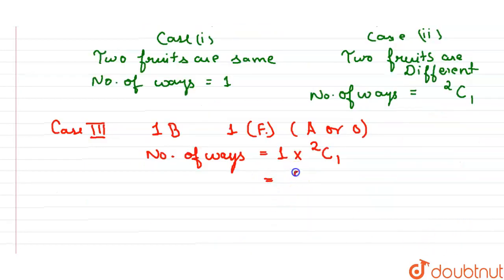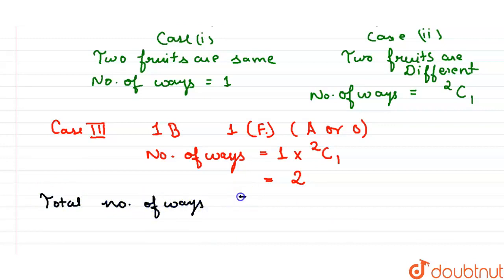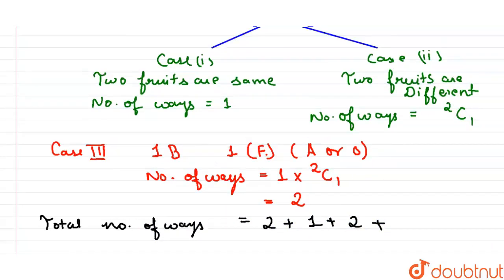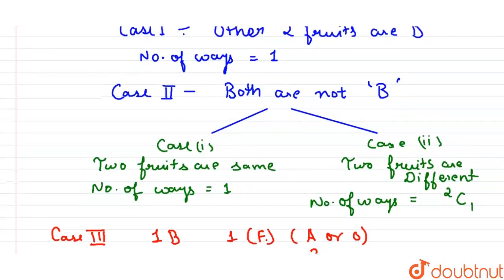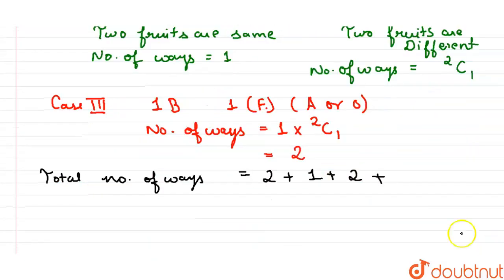So now total number of ways will be 2, this 2, plus 1, plus this will be also 2. Plus 2, 4, 5, 6. So 6 ways.